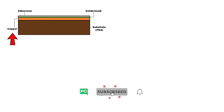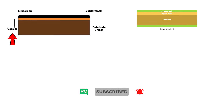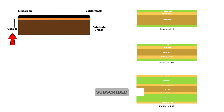Also, every time I talk about layers in PCB — like a single layer, double layer, or a multi-layer PCB — it generally refers to the amount of conduction layers in the PCB. We can actually stop the production at this stage, just having the base layer and the conduction layer.